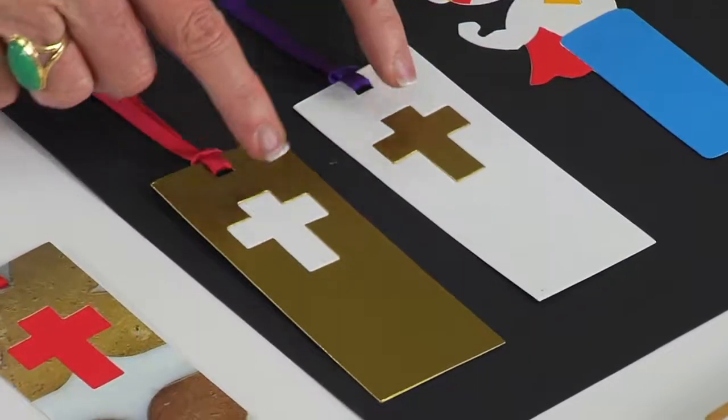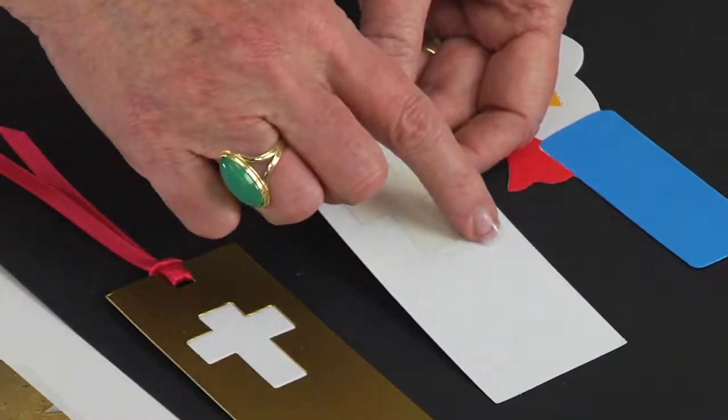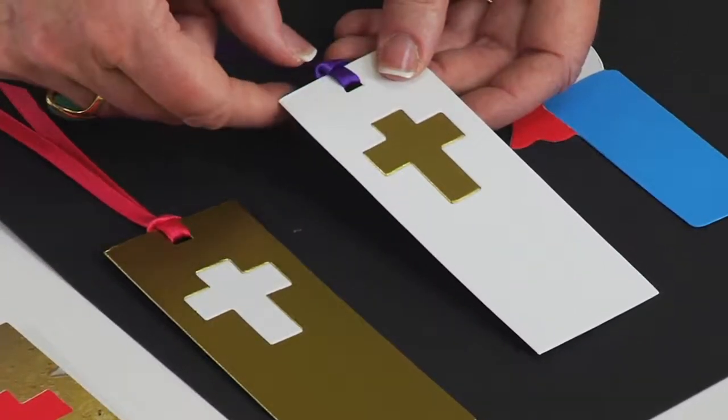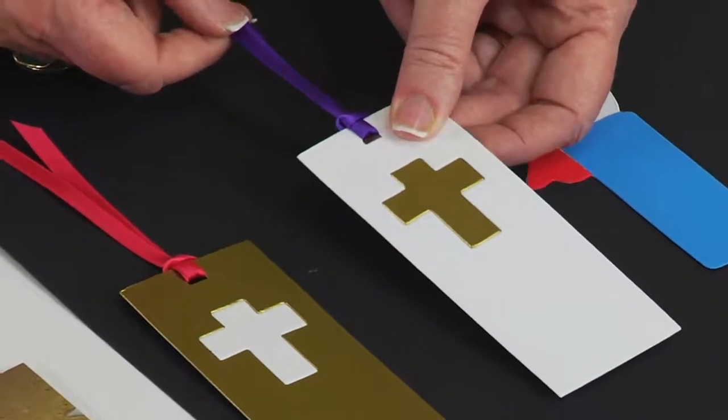And when I did the cross bookmark, I cut both gold and white, and then I mixed the cross. In fact, if I turn it over, you'll see I just used tape to hold it in the back because it actually cuts out and drops out of the bookmark shape. And once again, there is that really cool hole that makes it simple to add the ribbon.